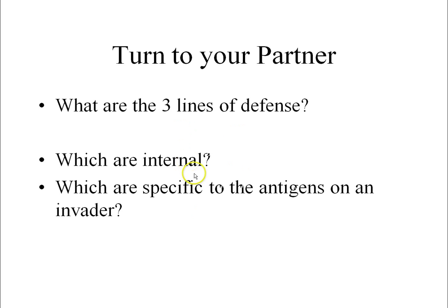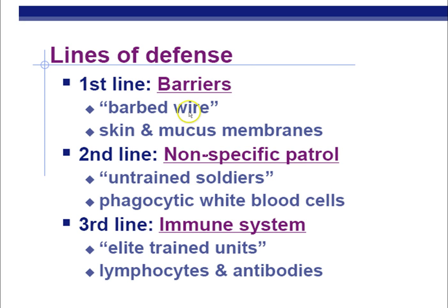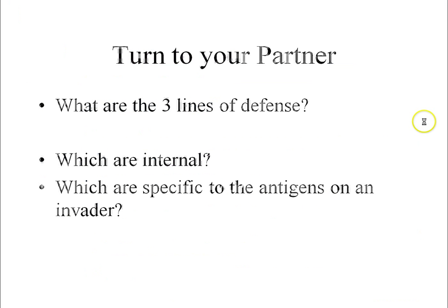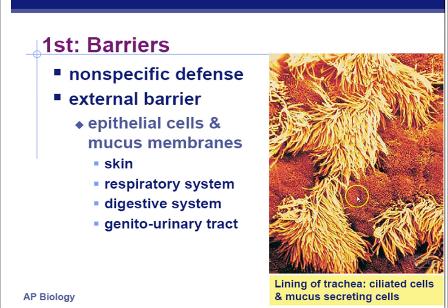There's only one line that's external, and that's the first line of defense — your skin and mucous membranes. Even though it lines the inside of your nose, it's still exposed to the external environment. The second and third lines are both inside your body. The third line of defense is specific to an invader's antigens. So let's go into the first line of defense.